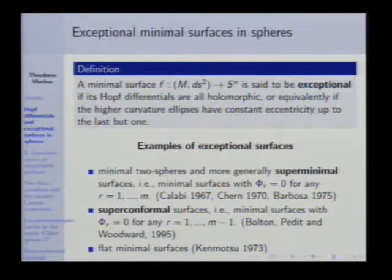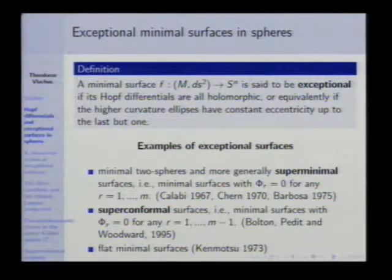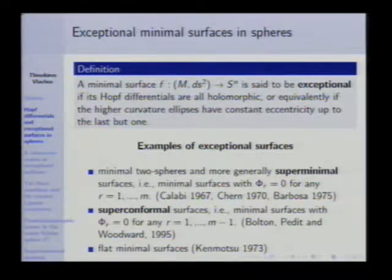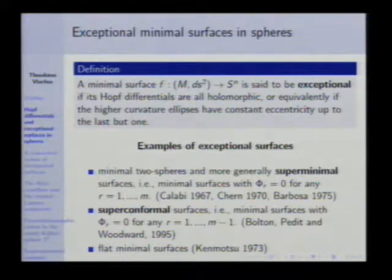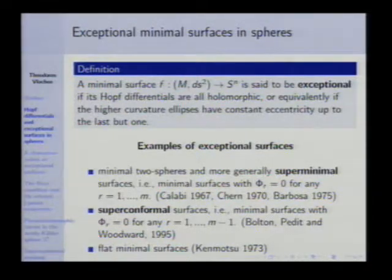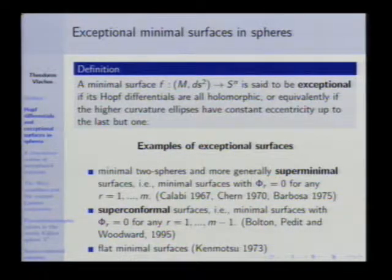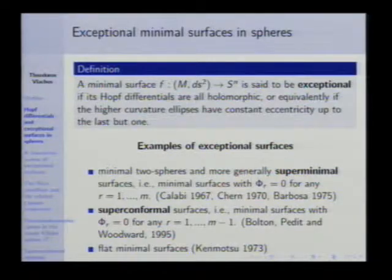Are there examples? Of course. Let's start with minimal two-spheres — they are always exceptional. Indeed, all the differentials vanish, which is a consequence of the Riemann-Roch theorem; this was already observed by Calabi and Chern. These minimal two-spheres are part of a wider class called super-minimal surfaces, also called isotropic minimal surfaces, studied by Calabi, Chern, and Barbosa. Another class of exceptional minimal surfaces was introduced in 1995 by Bolton, Petit, and Woodward — surfaces for which the Hopf differentials vanish up to the last one. Another class is the class of flat minimal surfaces, already studied by Lawson in 1973, for which he obtained a complete classification.